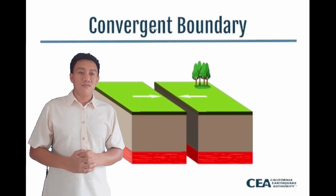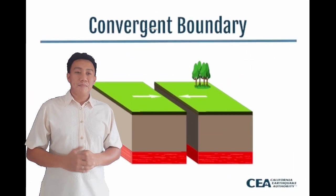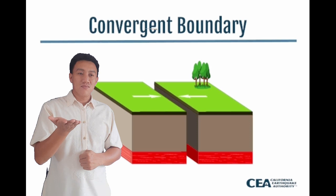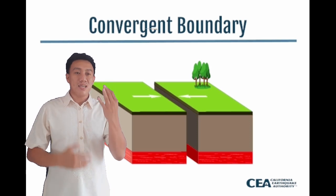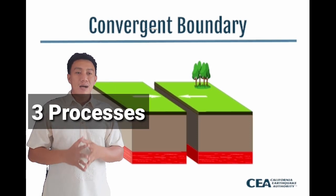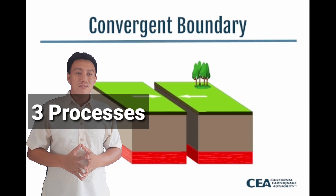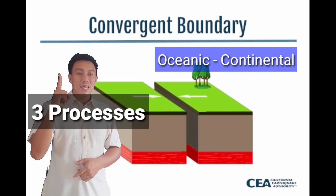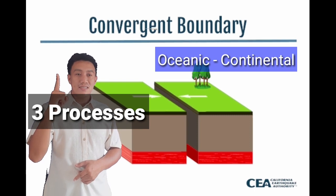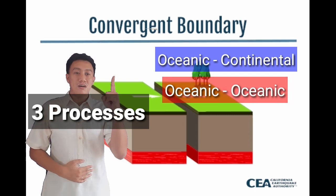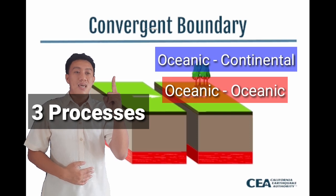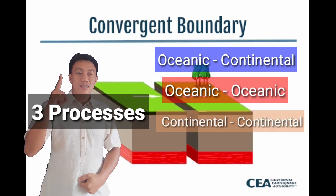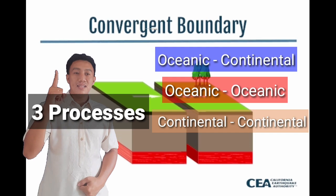Let's start with the convergent plate boundary. There are three processes happening in convergent plates: the convergence of oceanic and continental crust, the convergence of oceanic versus oceanic crust, and lastly, the convergence of two continental crusts.